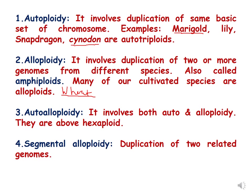What is alloploidy? Alloploidy involves duplication of two or more genomes from different species. They are also called amphiploids and many of our cultivated species are alloploids or amphiploids. One of the examples is wheat. The third classification is autoalloploidy which involves duplication of both the same genome and different genomes — it includes auto as well as alloploidy and they are always above hexaploid, meaning they have more than six sets of chromosomes. The fourth is segmental alloploidy which involves duplication of two related genomes.